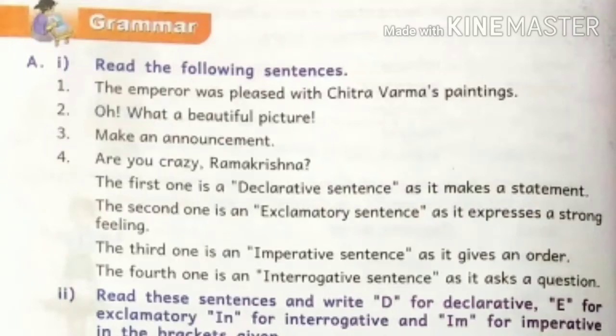6th class new English reader, unit number one, grammar, page number eight. Read the following sentences. Number one: 'The emperor was pleased with Chitravarma's paintings.' This is a declarative sentence — a general statement. Number two: 'Oh! What a beautiful picture!' The exclamation mark indicates this is an exclamatory sentence.